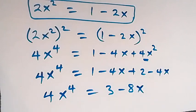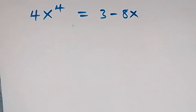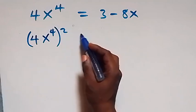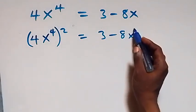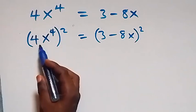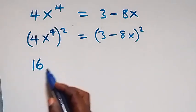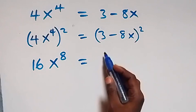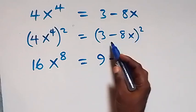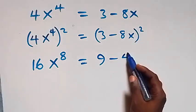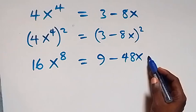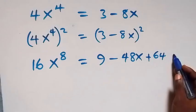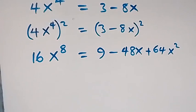From here, let's square both sides of this equation again. We have (4x⁴)² equals (3 - 8x)². On the left, 4² is 16 and (x⁴)² gives x⁸. On the right, we expand: 3² is 9, minus 2 times 3 times 8x giving 48x, plus (8x)² giving 64x².